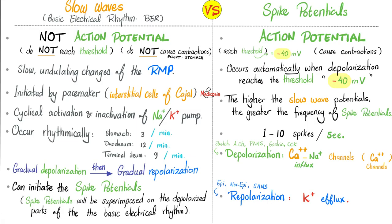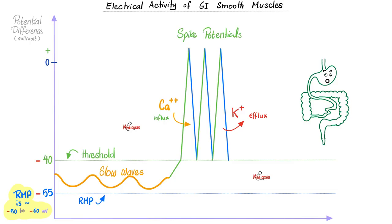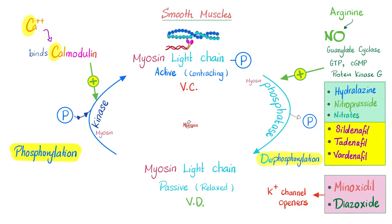In the last video, we talked about slow waves versus spike potentials. Spike potentials are the true action potentials, which means we reach threshold, which means we do cause actual contractions, thanks to calcium influx causing depolarization. Once calcium enters, it's going to bind calmodulin. Here is calcium entering into the muscle, binding calmodulin, which activates kinase.